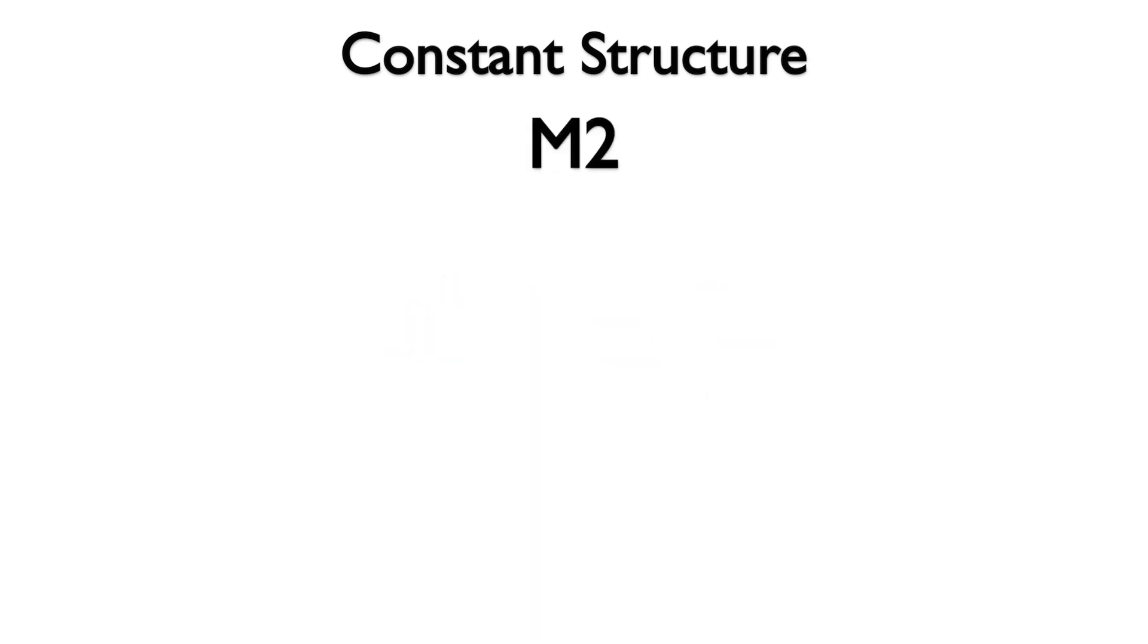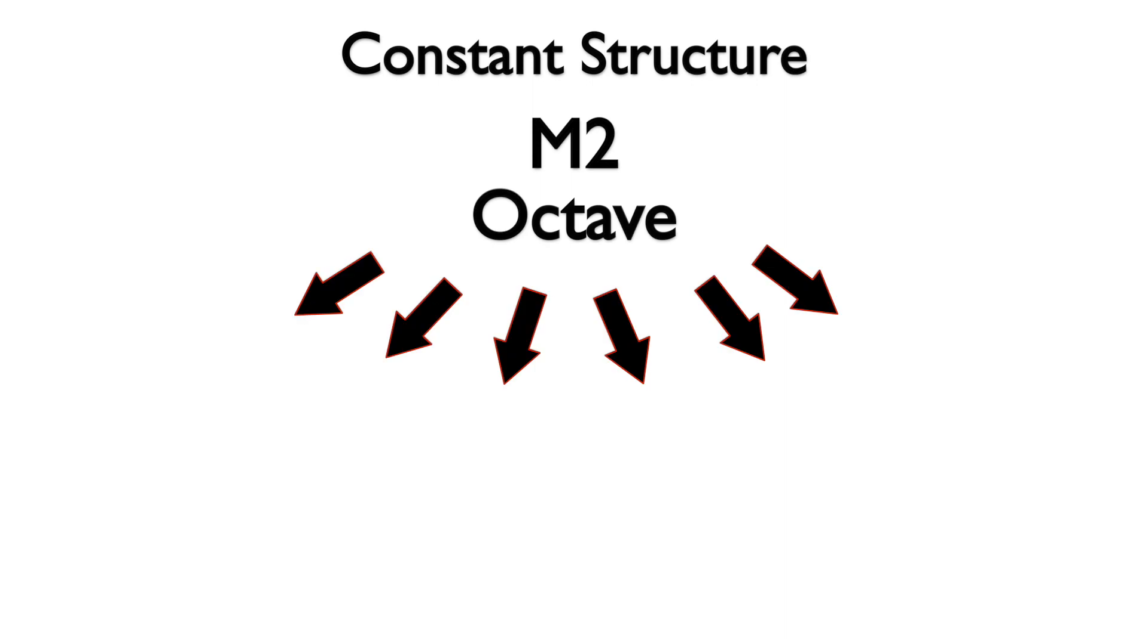The major 2nd divides the octave equally into six parts. Starting on C and ascending gives us C, D, E, F sharp or G flat, G sharp or A flat, A sharp or B flat.